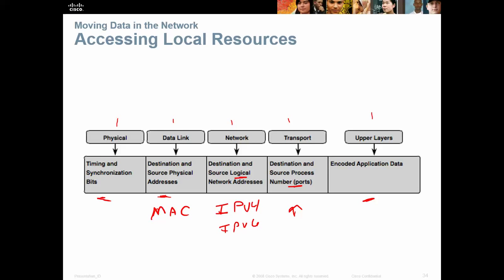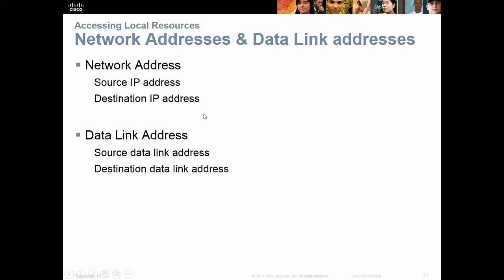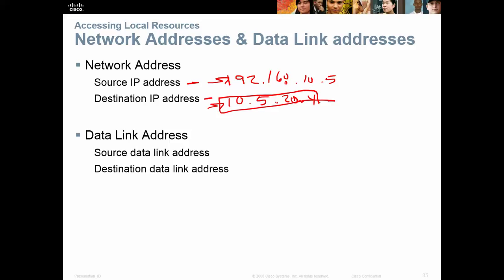Our network address is our source IP address and destination IP address. The source might be something like 192.168.10.5 and the destination might be 10.5.20.4. When that packet comes back, these two swap roles — the web server sends the page back, so the source becomes 10.5.24 and the destination becomes 192.168.x.x. It's like receiving a letter, answering it, readdressing it, and sending it back.